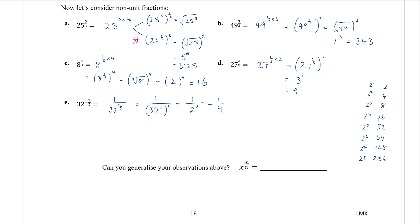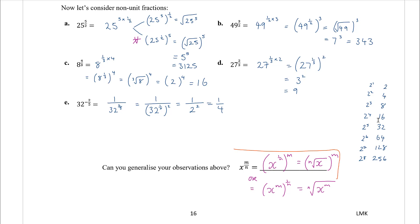So to generalize: x to the power of m over n can be written as x to the power of one over n, to the power of m — meaning the nth root of x, all to the power of m. Or we could write it as x to the m, then to the one over n, meaning the nth root of x to the m. It's usually easier to go with the first version: make the number smaller via the root before making it bigger.